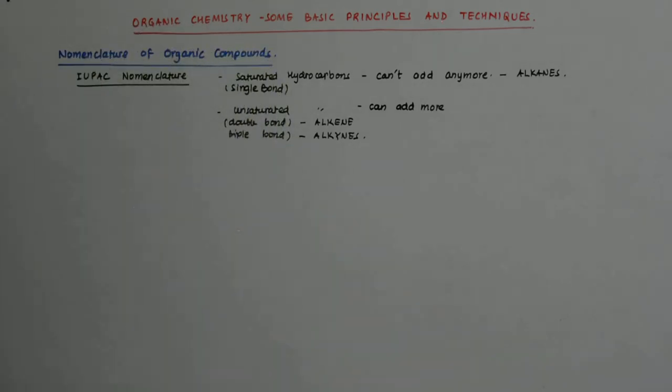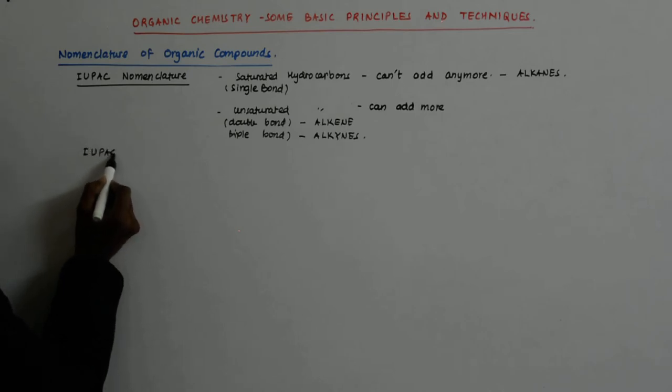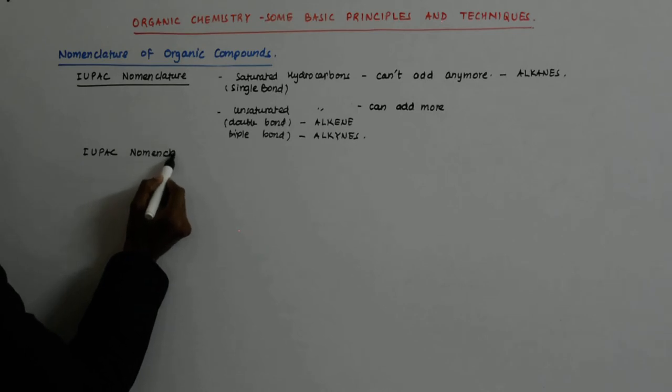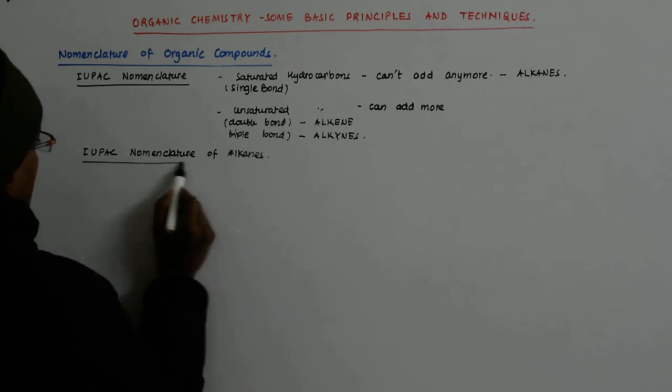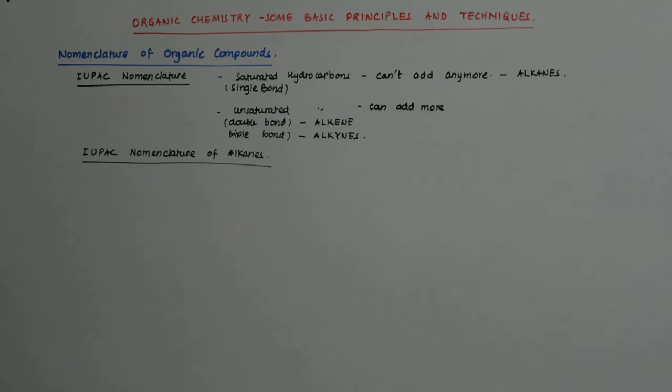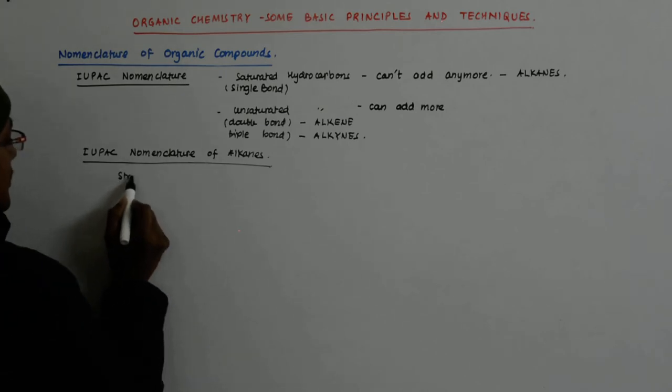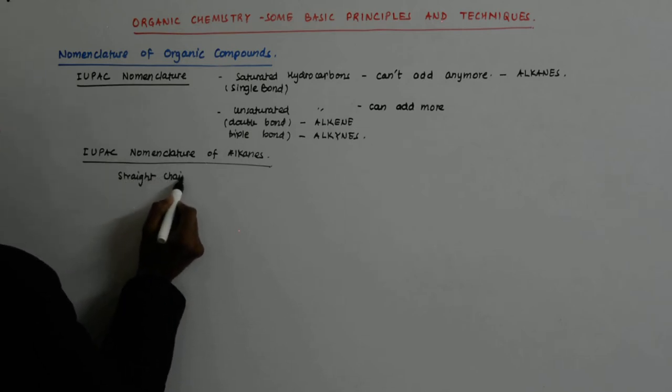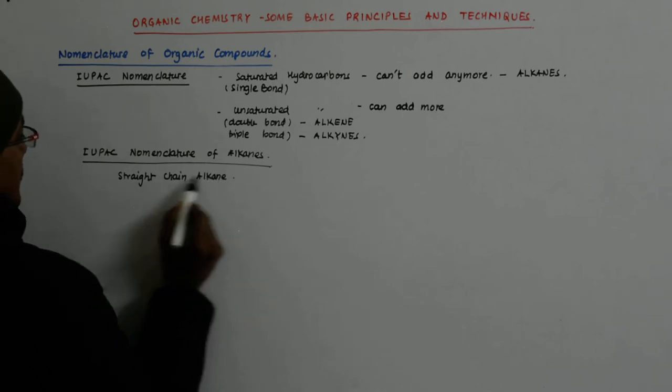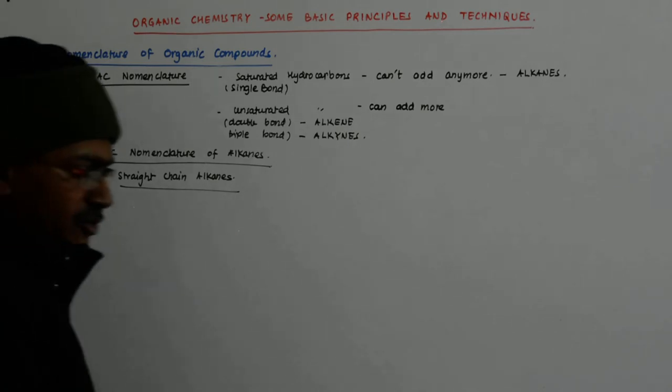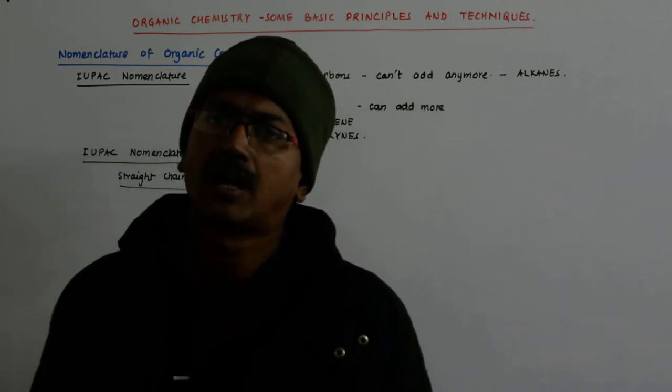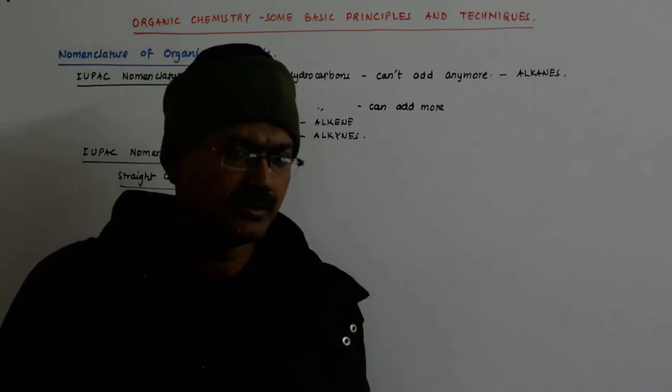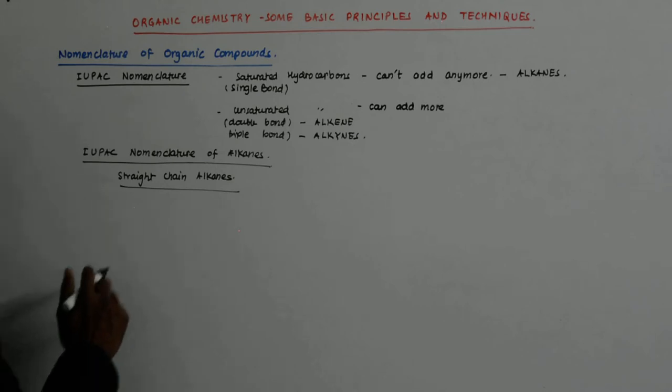Now, we start with the simplest, the IUPAC nomenclature of alkanes. And in that as well, we first name the straight-chain alkanes. We see that beyond, from and beyond butane, you start having different arrangements. But we are, right now, concentrated on straight-chain alkanes.